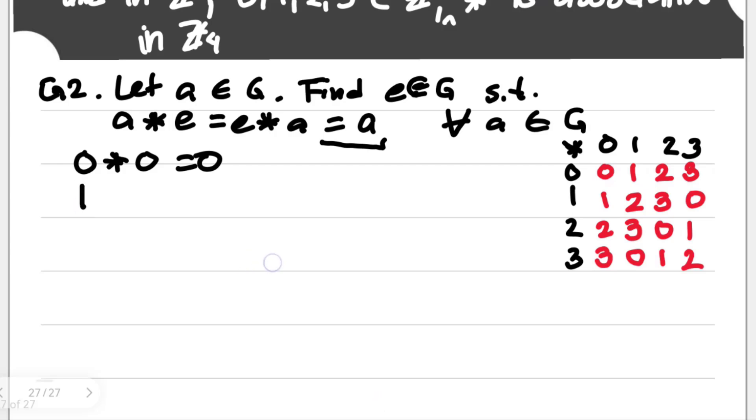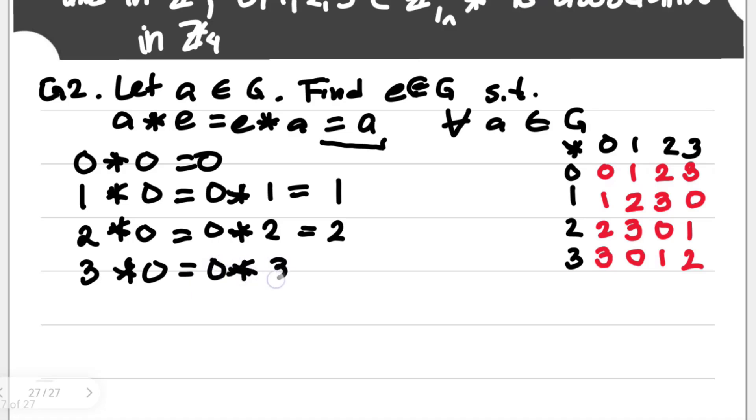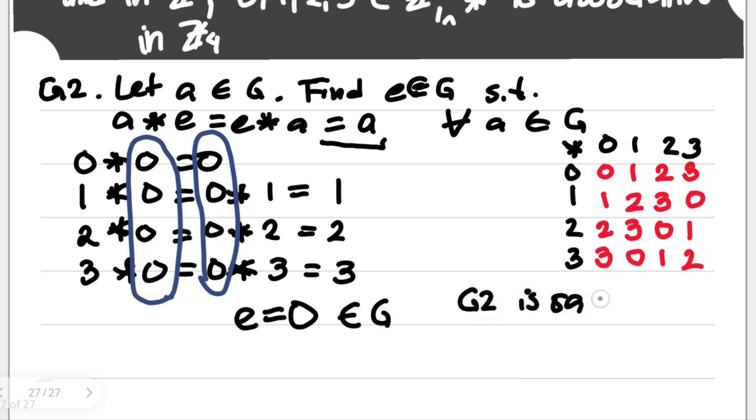Let's just examine it here. So you have here 1 star 0 is equal to 0 star 1 is equal to 1. For 2, 2 star 0 is 0 star 2, that's 2. 3 star 0, 0 star 3 is 3. For all of this, these are only possible if this set of elements here is present on our G. And these are actually just the same as 0 itself. So our identity here is 0. It is an element of G. Therefore, G2 is satisfied because there exists an identity for our operation here which is 0, and it's an element of our G or Z sub 4.